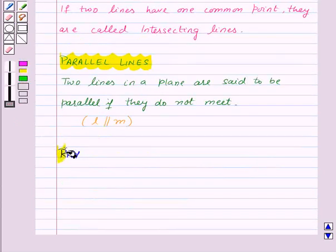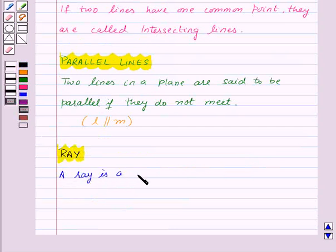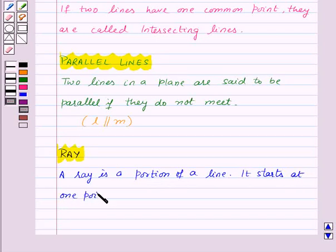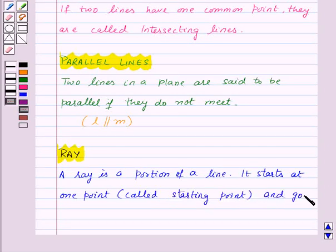Now let us see what is a ray. A ray is a portion of a line. It starts at one point called starting point and goes endlessly in a direction.